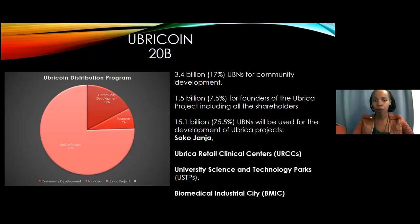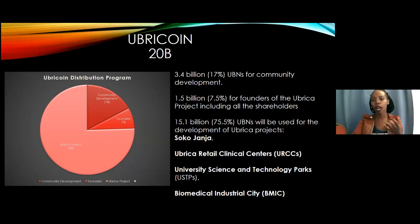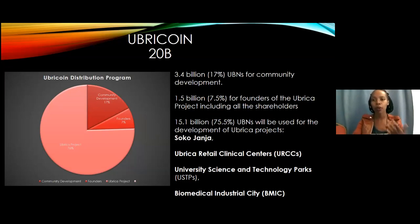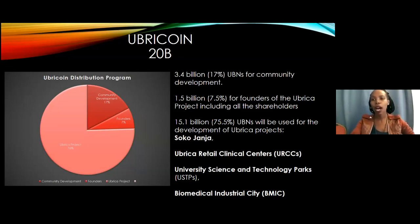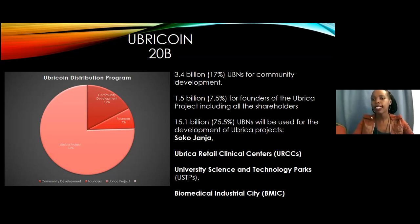When Ubicoin was created, it was distributed to support the Ubica project. The Ubica project started way before Ubicoin. The whole vision of Ubica was to achieve global health. To support Ubica projects, we set aside 76% of the 20 billion Ubicoin towards making sure that we have access to healthcare, quality of healthcare, and high quality healthcare here in Kenya. Then 17% is for community development, which corresponds to the commodity function — trading Ubicoin in the markets.